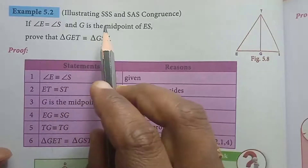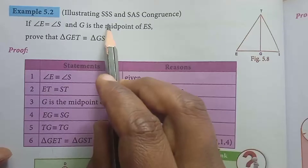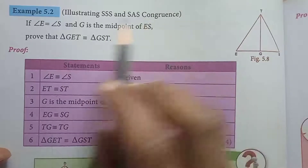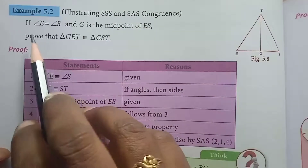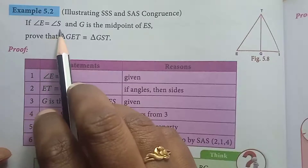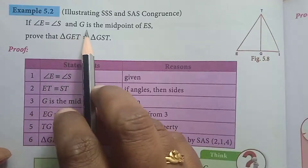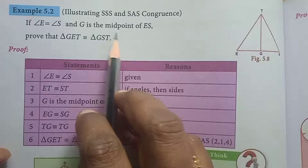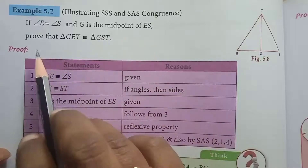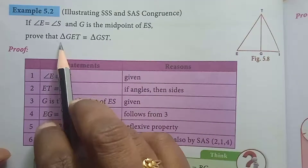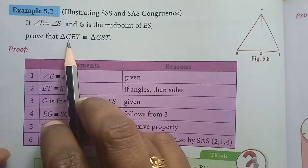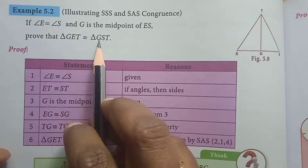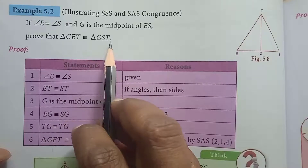Illustrating SSS and SSA congruence. If angle E equals angle S and G is the midpoint of ES, prove that triangle GET is congruent to triangle GST.